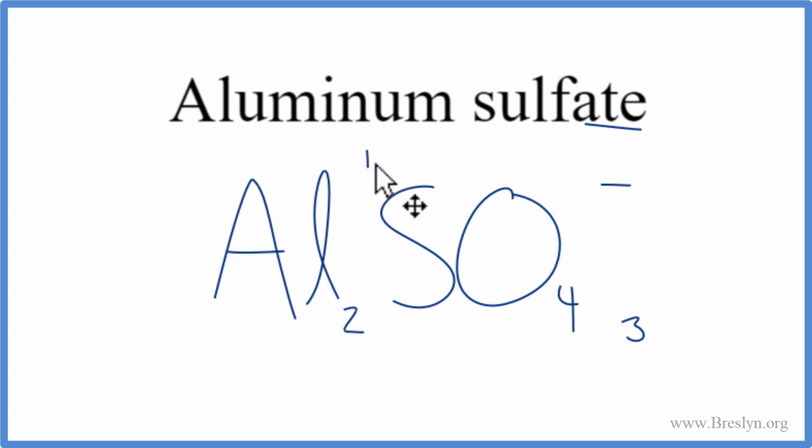Let's get rid of the charges, and then we do need to put parentheses around the sulfate, since it's a polyatomic ion, and we have three of them. So this is the formula for aluminum sulfate.